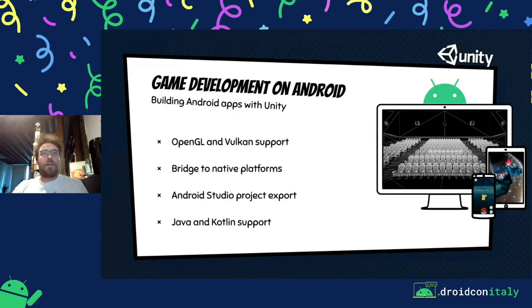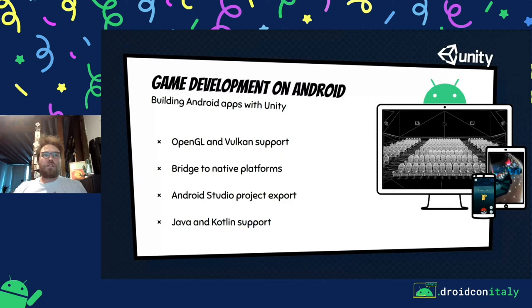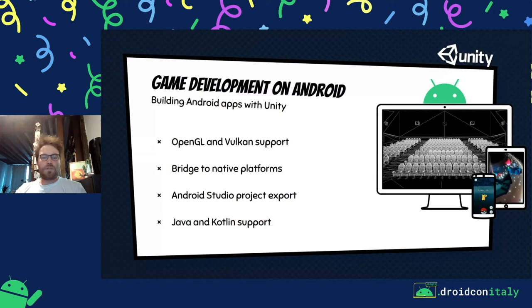Regarding Android support, Unity has great support for OpenGL and Vulkan more recently, allowing very high-quality graphics. It has native support to let Unity talk to Android and Android talk back to Unity. You can also export to Android Studio, so Android developers can add new features to help the Unity part. You can also use your Java and Kotlin files as libraries inside a Unity project.